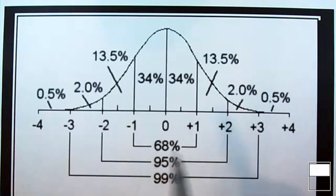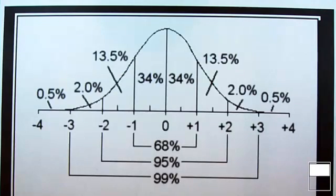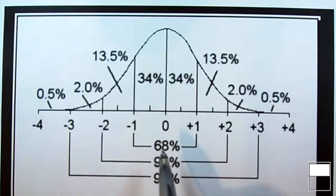Scores in a normal distribution can be scores of height, weight, sales prices of houses, speed of cars, miles per gallon, or distributions of income. We take these scores and convert them to z-scores, and we'll talk about why we do that.